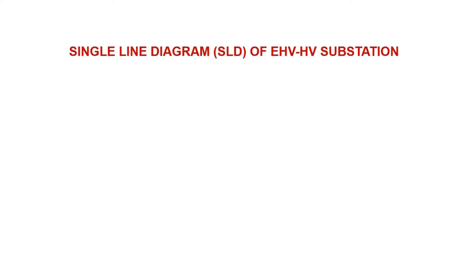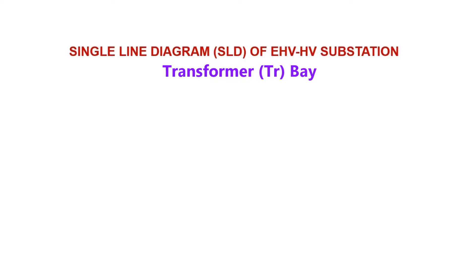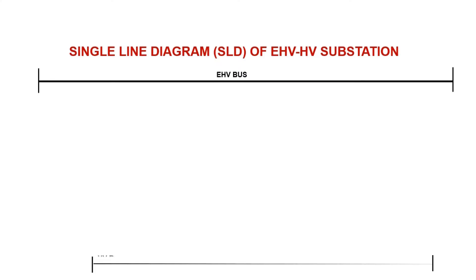Today we will see the single line diagram of an EHV-HV substation. In this video we will learn about the single line diagram of a transformer bay. Let us start by drawing the EHV bus on the HV side of a transformer and the HV bus on the LV side of the transformer.